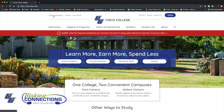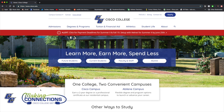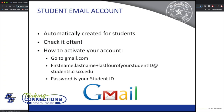Once you've applied and enrolled in your first class, Cisco College will create your student email address. You'll want to log into your student email account often. This is how Cisco College offices like admissions and financial aid will communicate with you. If you've completed an application or registered for an online course, then you've already got some important mail waiting for you, including the registration guide.